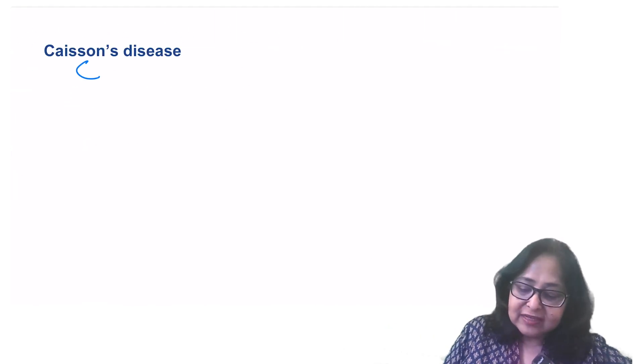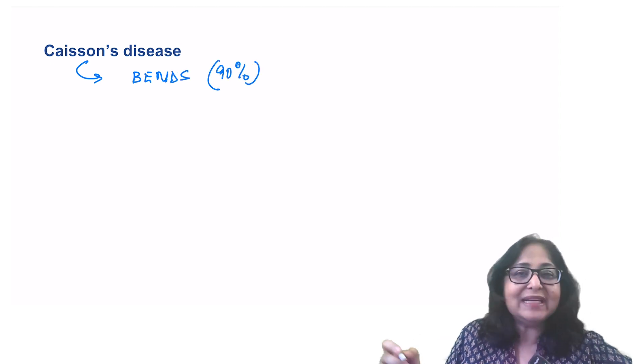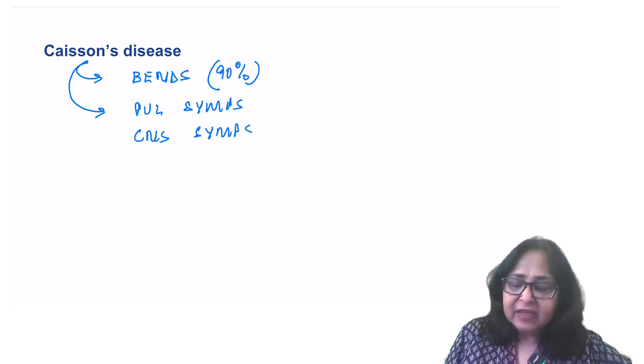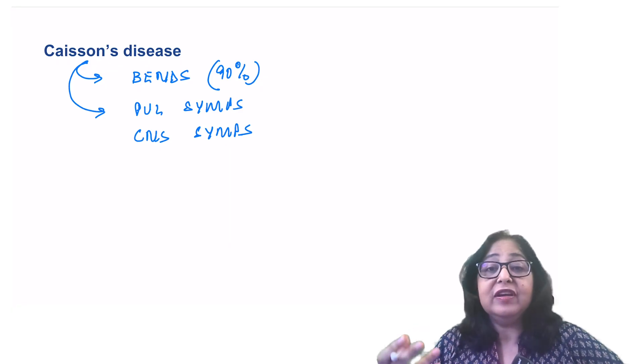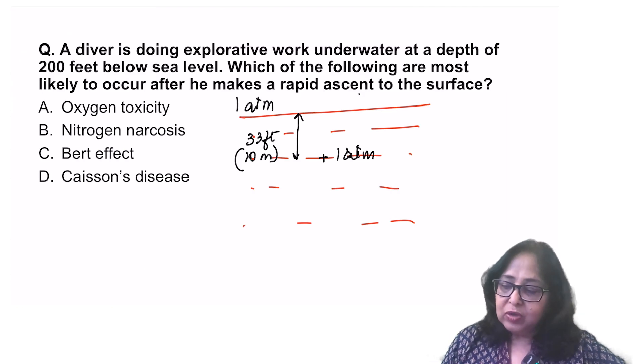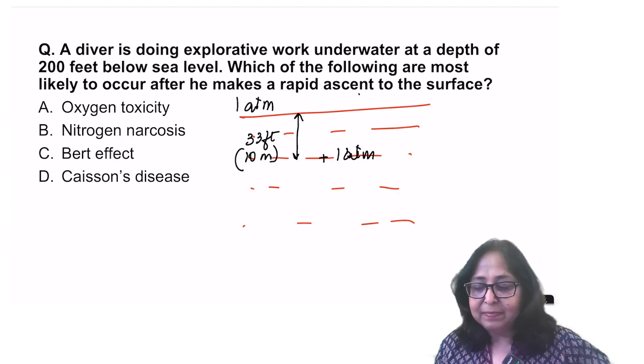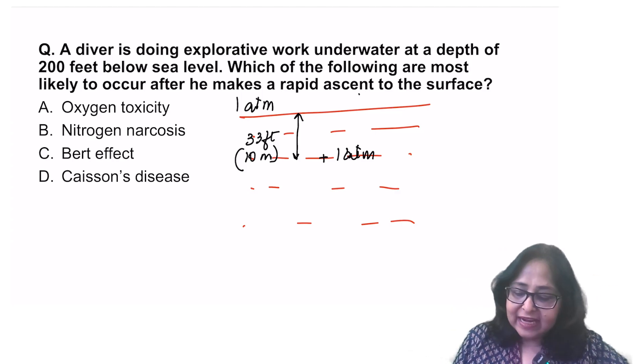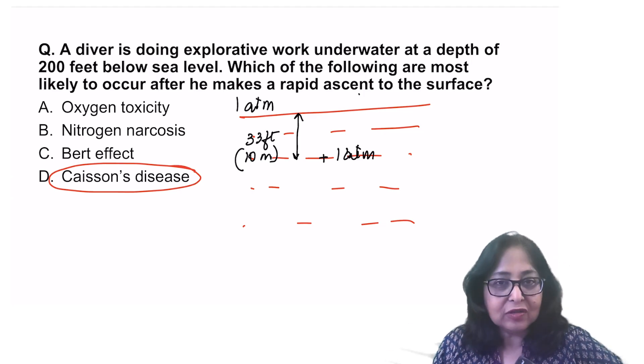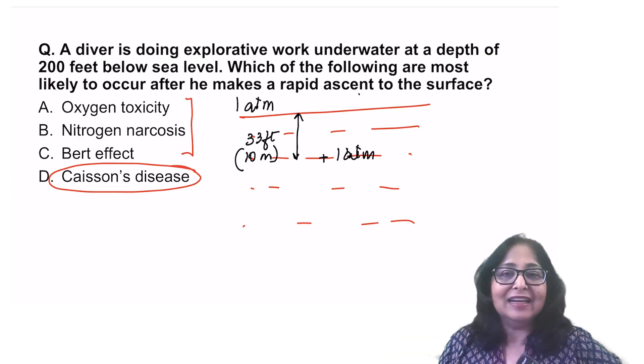The symptoms of caisson's disease are bends. 90% of the patients will present with bends, painful joints and muscles. They can also be pulmonary symptoms, can also present with CNS symptoms, which include convulsions, coma, maybe even death. So let's go back to the question which I asked you. A diver doing explorative work underwater at a depth of 200 feet below sea level makes a rapid ascent. He is most likely to suffer from caisson's disease. Oxygen toxicity, nitrogen narcosis, Burt effect, Smith effect which are forms of oxygen toxicity will all occur underwater.